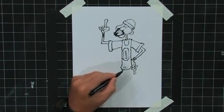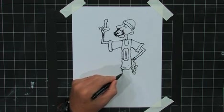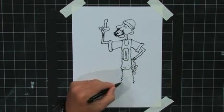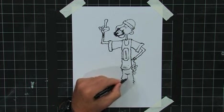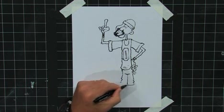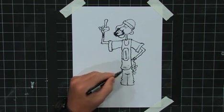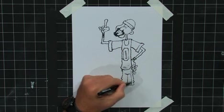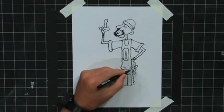Now we need some shorts. We'll make them kind of baggy so we can just make them wrinkly like this. There we go. That looks good. I think maybe I'll give him a little stripe on the side there. Okay. Just like that.